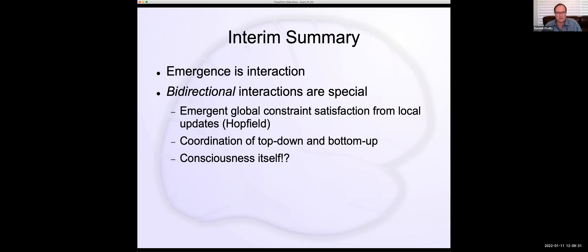So that's part one of my talk: emergence is a function of the degree of interaction among things. It depends on having interactions between elements — the interaction essentially defines the emergence, and that's why you can be independent of the substrate. We can capture those interactions on a computer because they don't depend on the particular form of the substrate. The bidirectional interactions are special, and Hopfield's original insight has a lot of relevance for understanding how the brain works — the coordination of top-down higher levels with lower levels, and possibly even consciousness.